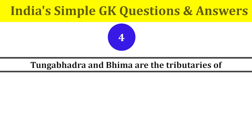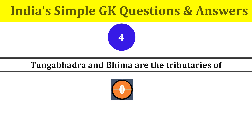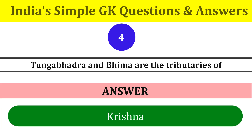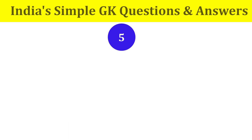Question number four: Tungabhadra and Bhima are tributaries of? They are tributaries of the Krishna river.